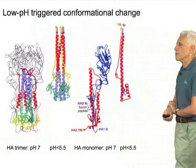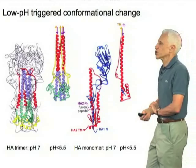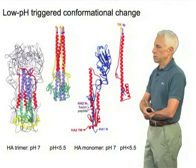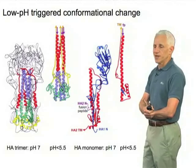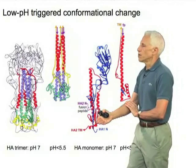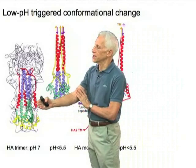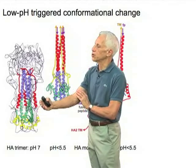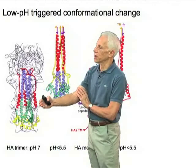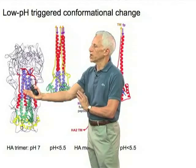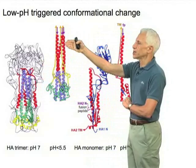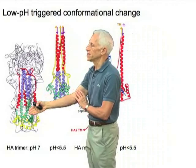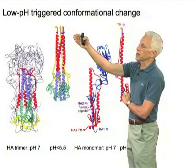Here's the low pH-triggered conformational change. One way of describing it from the point of view of the monomer is that the HA2 part turns itself inside-out. The part of HA2 — easier to see in this representation with colored segments — the part that's on the outside in the trimer, which is red and then merging into blue, is on the inside after the conformational change, and the part that's on the inside, green and yellow, turns around and comes up the outside.